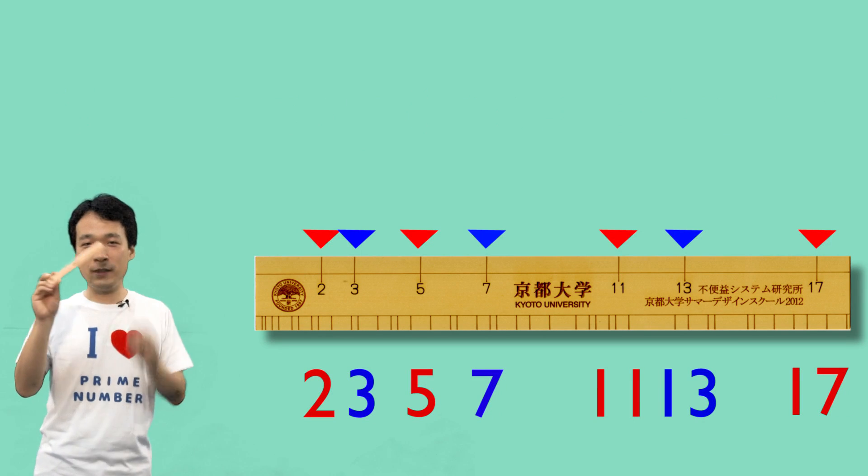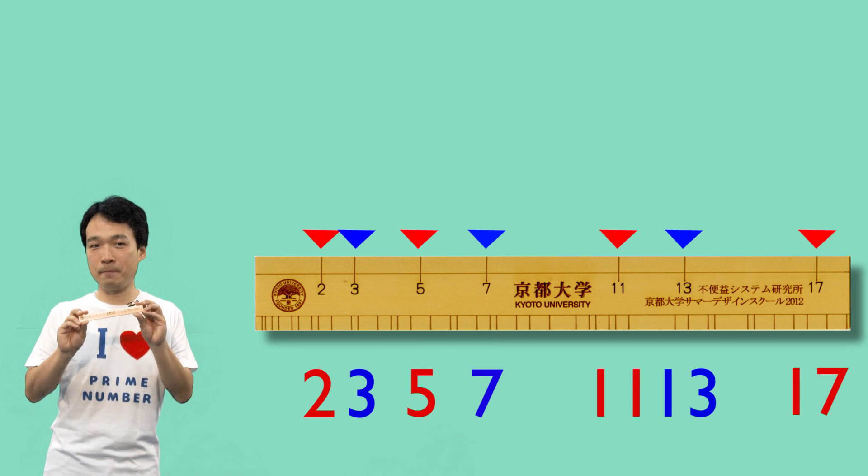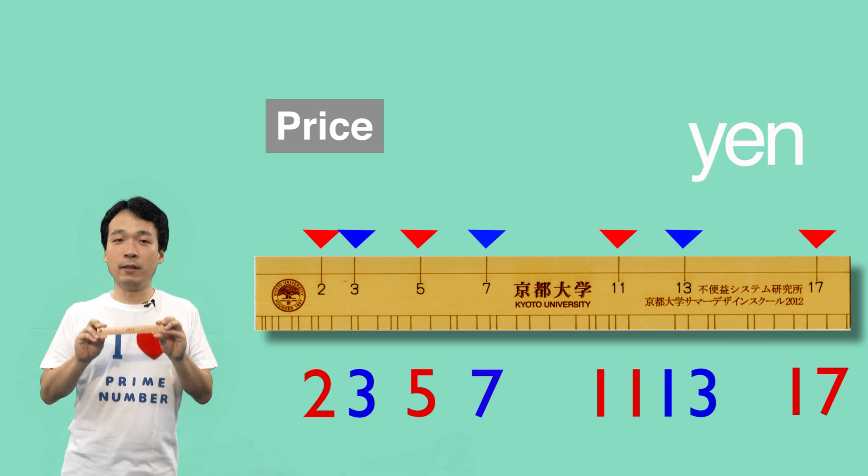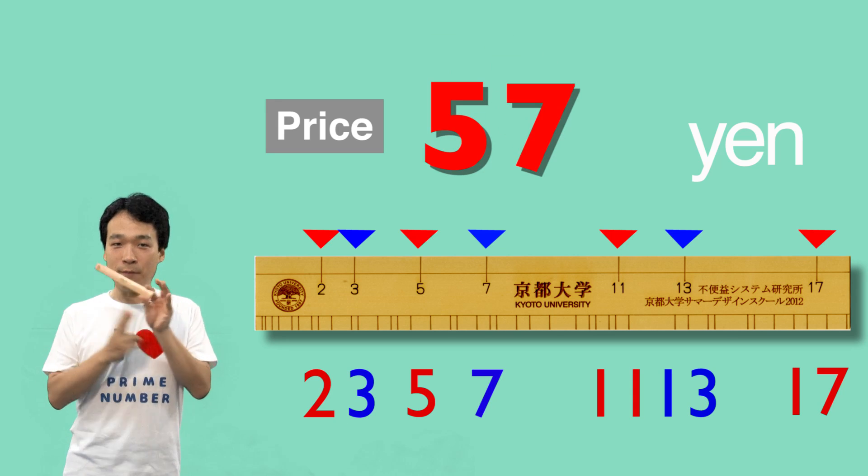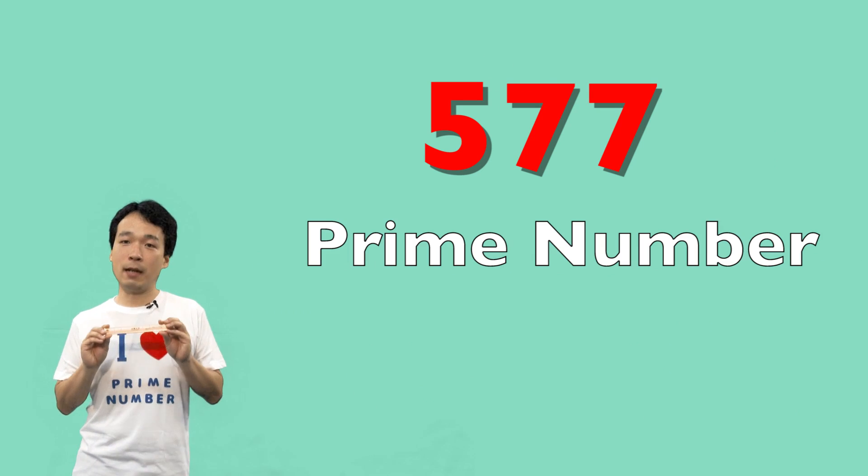By the way, if you want this item, you can buy one in a store at Kyoto University. The price is 577 yen. 577 is a prime number, of course.